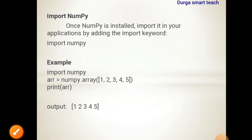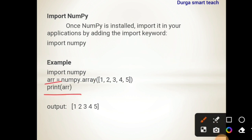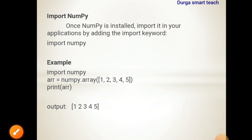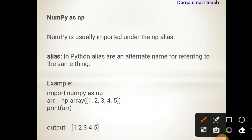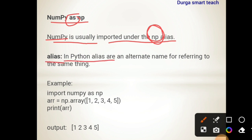To print the array elements, use print(arr). In this way we can create an array. NumPy is usually imported under the alias 'np'. So most programmers write 'import numpy as np'. In Python, aliases are alternative names for referring to the same thing.